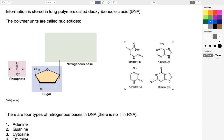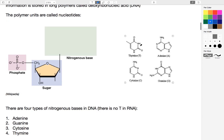Depending on the type of molecule, the particular base will attach to an atom on the sugar molecule. There are four types of nitrogenous bases in DNA. There is no T in RNA, and we'll talk about that a little bit later. The four options are A, G, C, and T. Those are the polymer units.